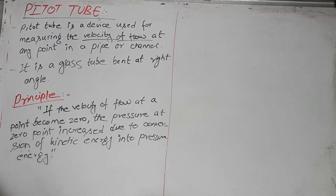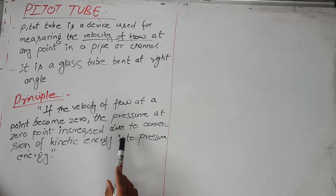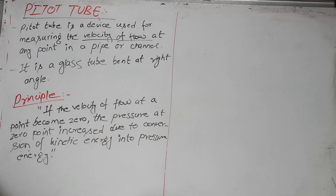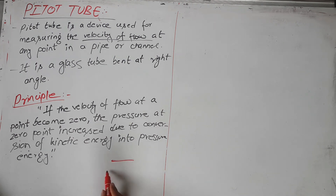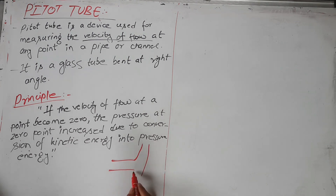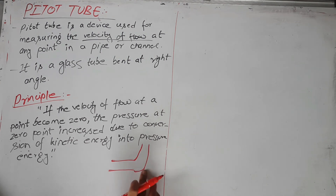This is the principle of the pitot tube: if the velocity of flow at a point becomes zero, then the pressure at that zero-velocity point increases due to the conversion of kinetic energy into pressure energy. Here is the pitot tube placed in water or a channel.